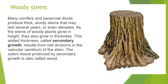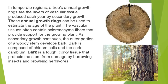Many conifers and perennial dicots produce thick, sturdy woody stems that may last several years or even decades. As the stems of woody plants grow in height, they also grow in thickness. This added thickness, called secondary growth, results from cell divisions in the vascular cambium of the stem. The tissue produced by secondary growth is also called wood. In temperate regions, a tree's annual growth rings are the layers of vascular tissue produced each year by secondary growth, and can be used to estimate the age of the plant.